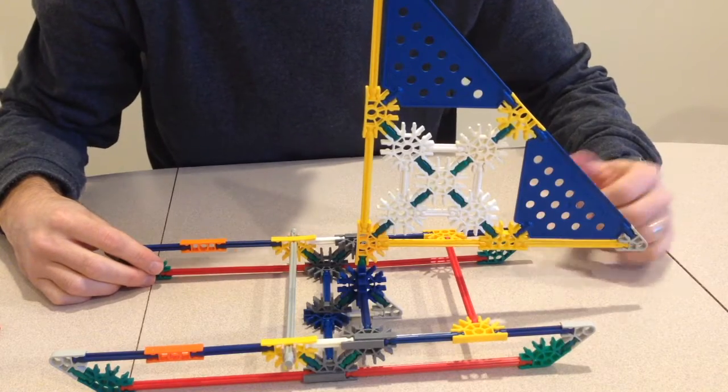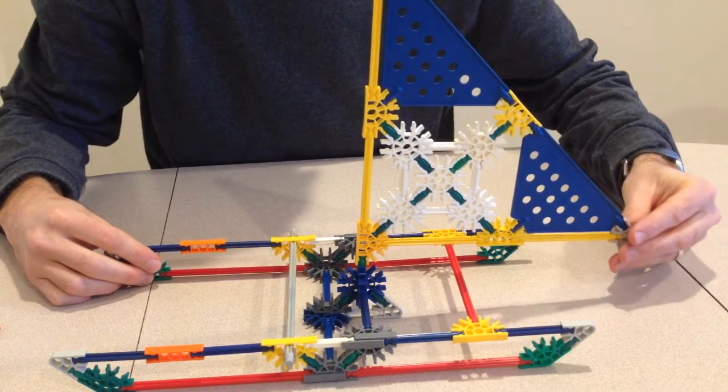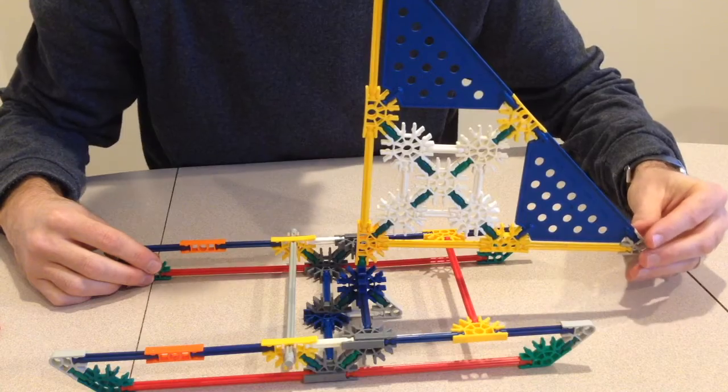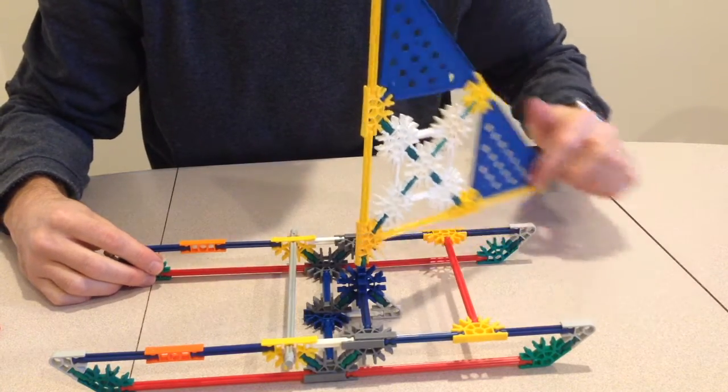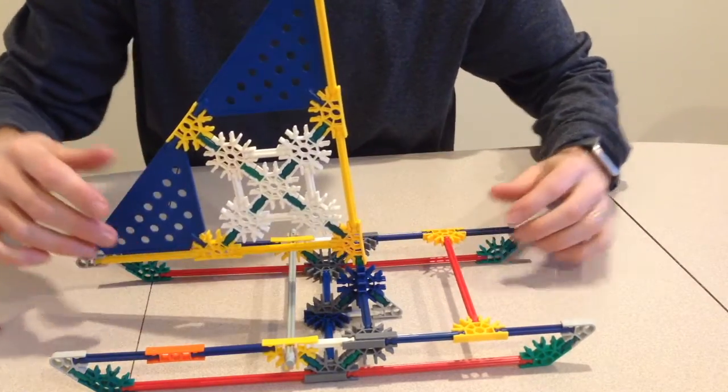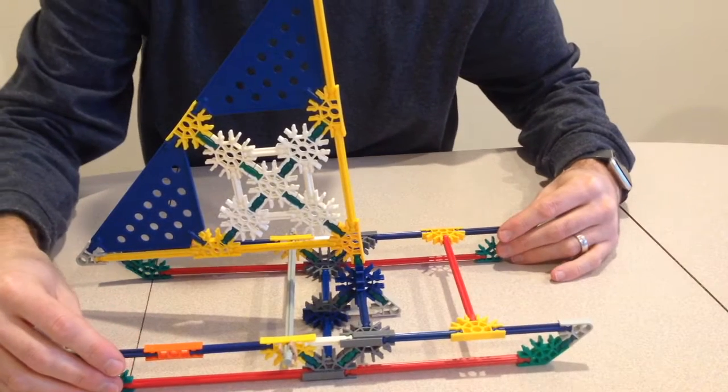Today, I'm going to show you how to use K'nex pieces to build this cool, simple catamaran. The catamaran has a tall rotating sail and a long hull to put other toy characters.